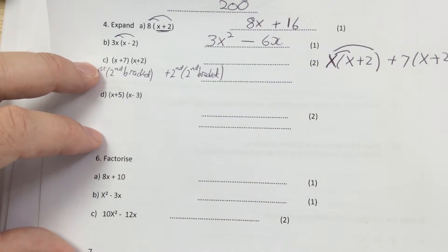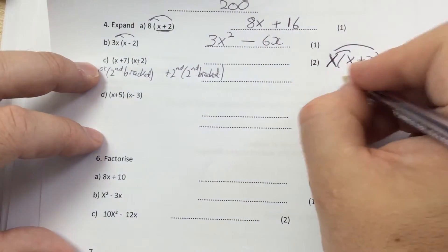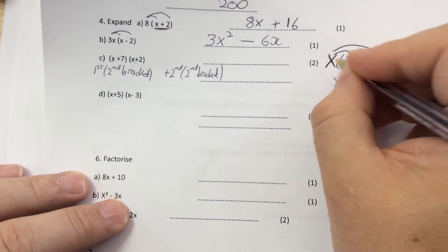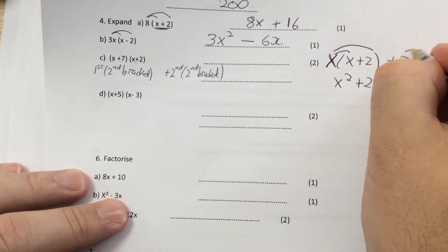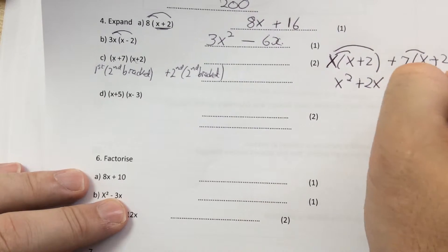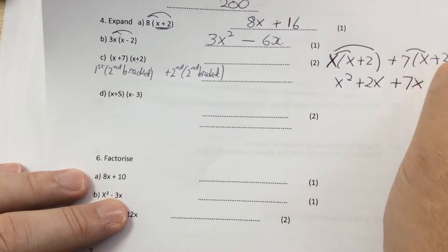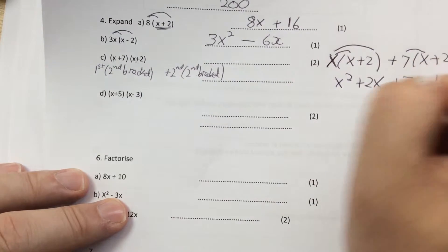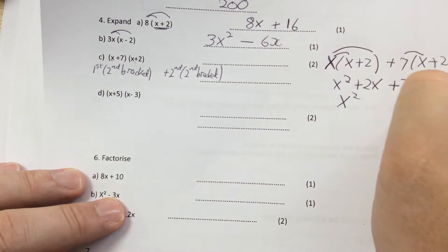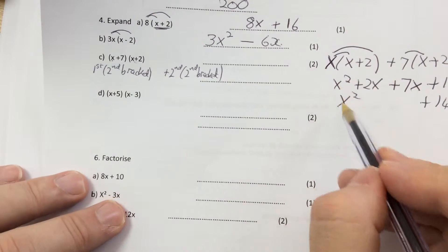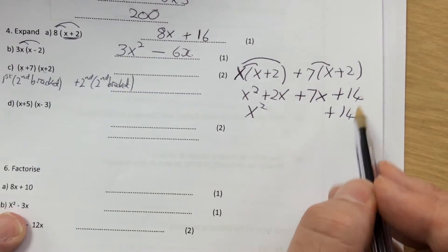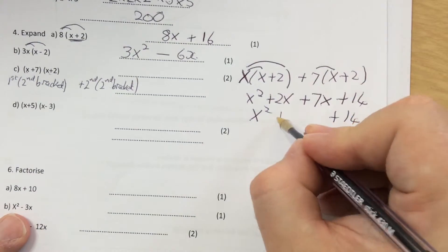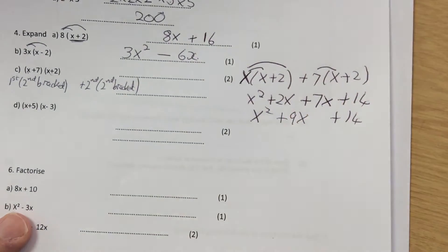So we do x times x is x squared, and then x times 2 is 2x. And then I've got 7 times x is 7x, and then 7 times 2 is 14. And at the end, then, I can bring it together, because x squared is the only one with the power squared. The 14 is the one with the 14. And 2x add 7x make 9x.